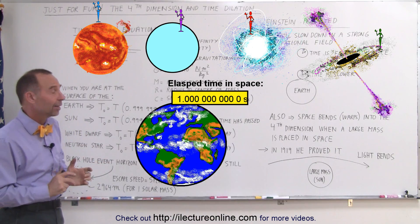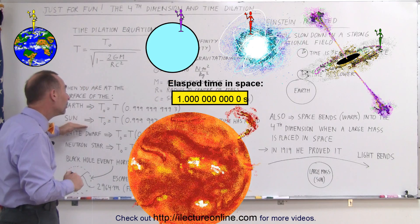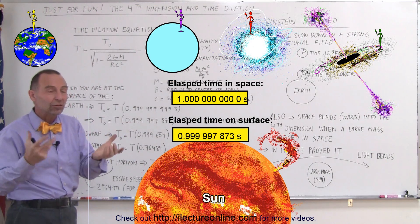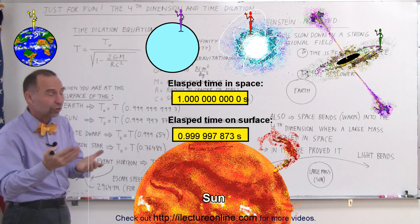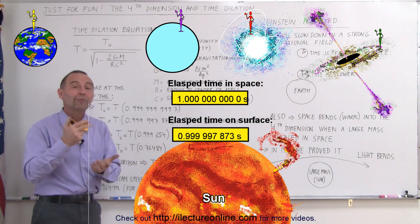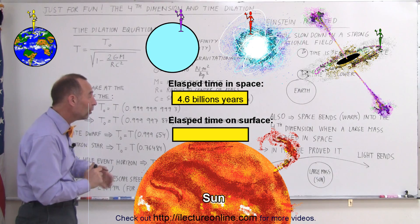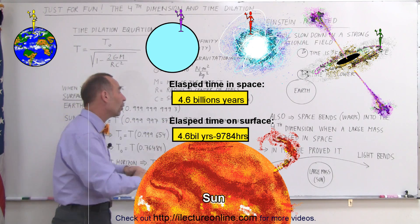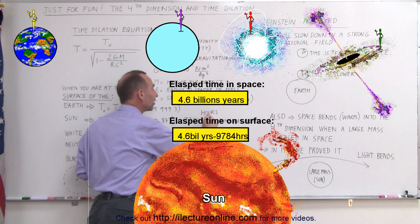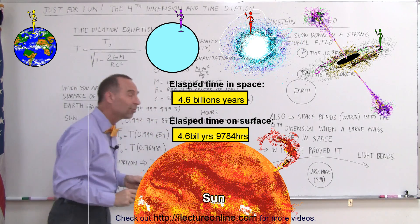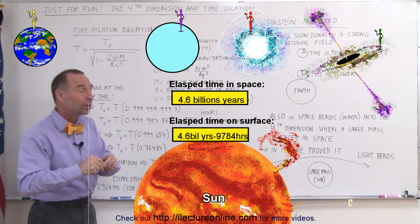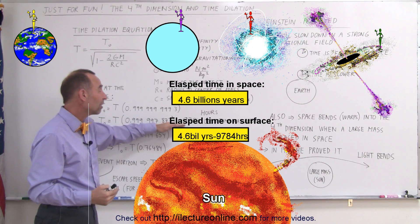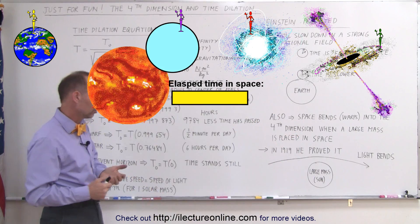When we get to the Sun, it becomes a little bit more significant. It turns out that in the duration of the Sun's existence and the Earth's existence, because the Earth and the Sun were formed about 4.6 billion years ago, since that time, 9,784 hours less time has passed on the Sun than on the Earth because the gravitational force on the surface of the Sun is stronger than the gravitational force on the surface of the Earth.